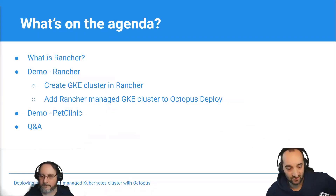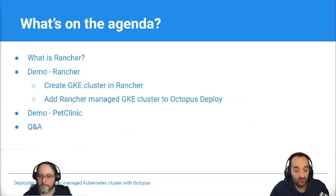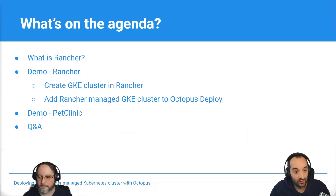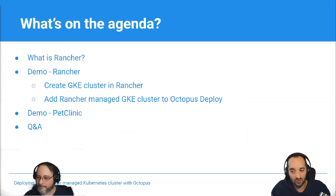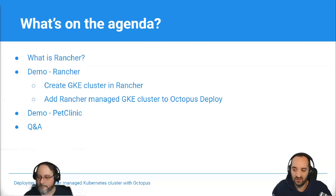So what's on the agenda for today? We're going to briefly cover what Rancher is. This webinar won't dive too much into the Rancher product itself. Instead, we're going to show you how Rancher and Octopus can be used together to deploy applications to your Kubernetes cluster. This isn't a getting started webinar, so we're assuming some familiarity with core Octopus concepts.